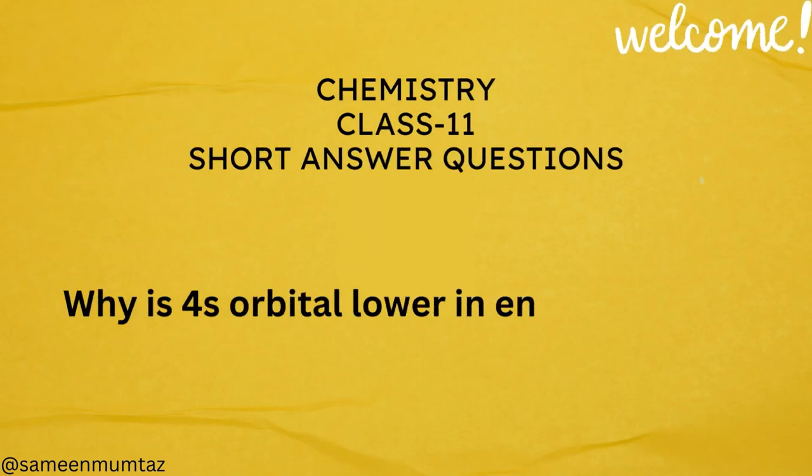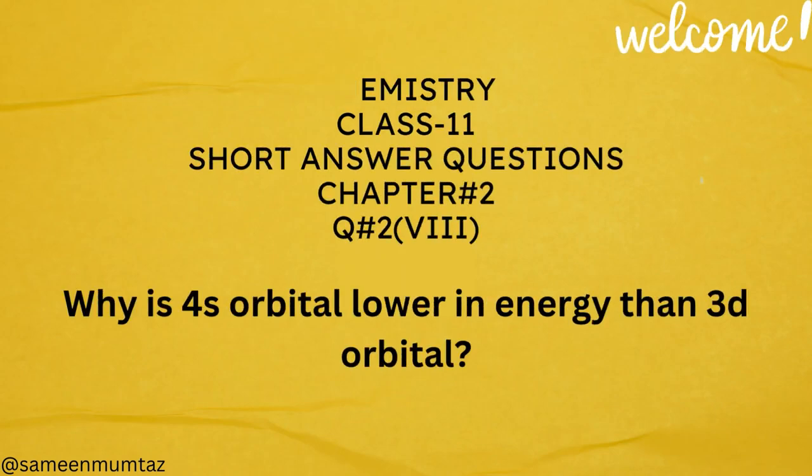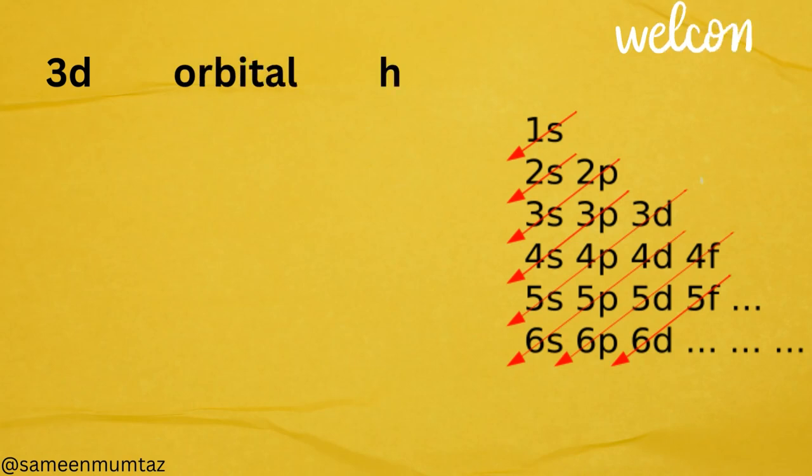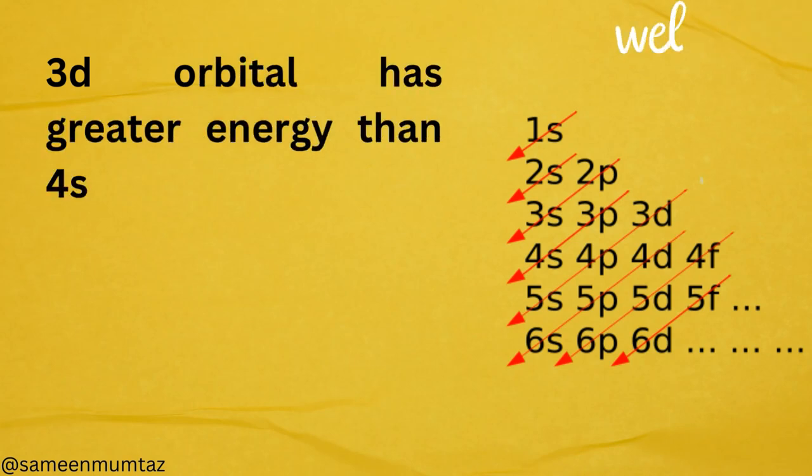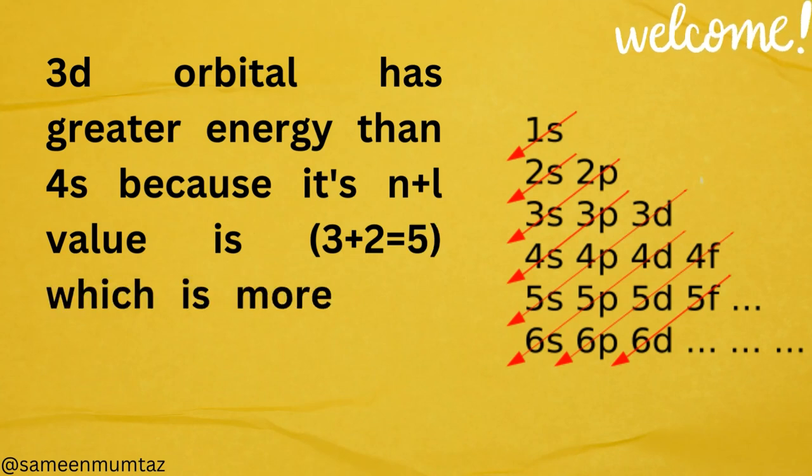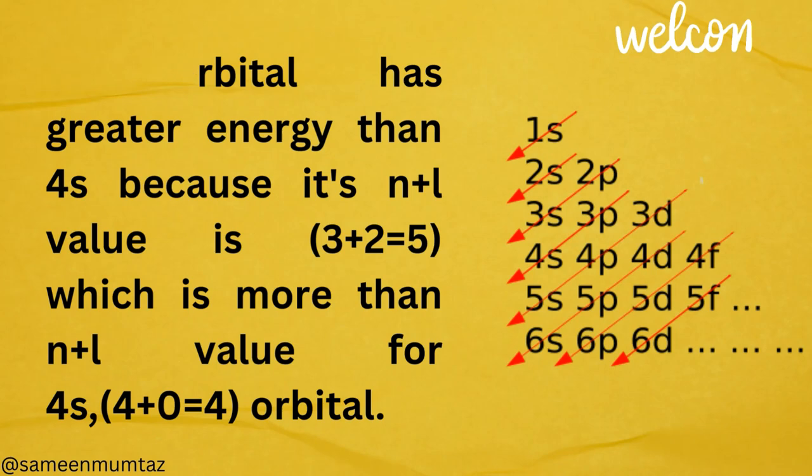Review question number 2 part 8. Why is 4s orbital lower in energy than 3d orbital? 3d orbital has greater energy than 4s because its n plus l value is 3 plus 2 equals 5, which is more than n plus l value for 4s, 4 plus 0 equals 4.